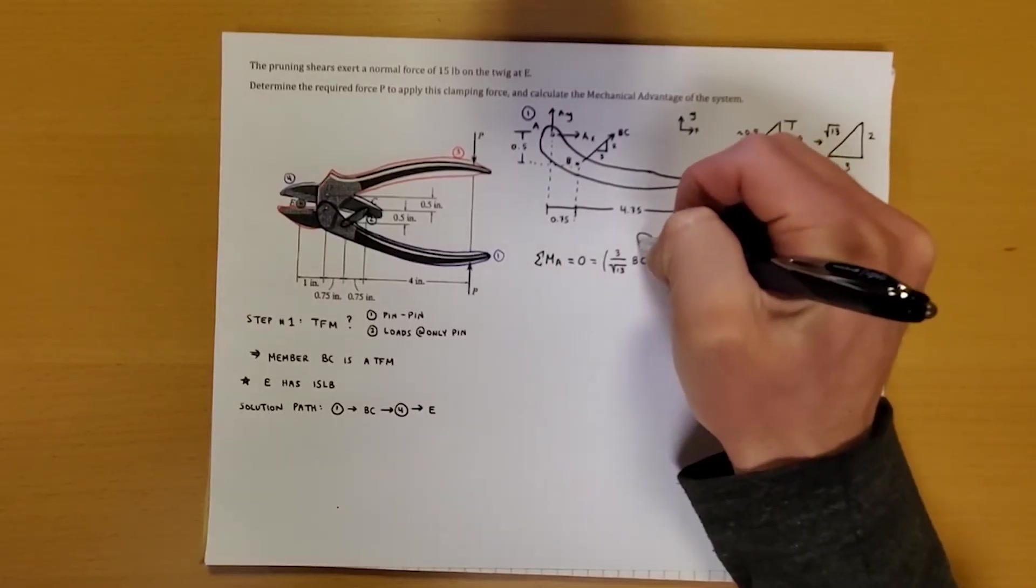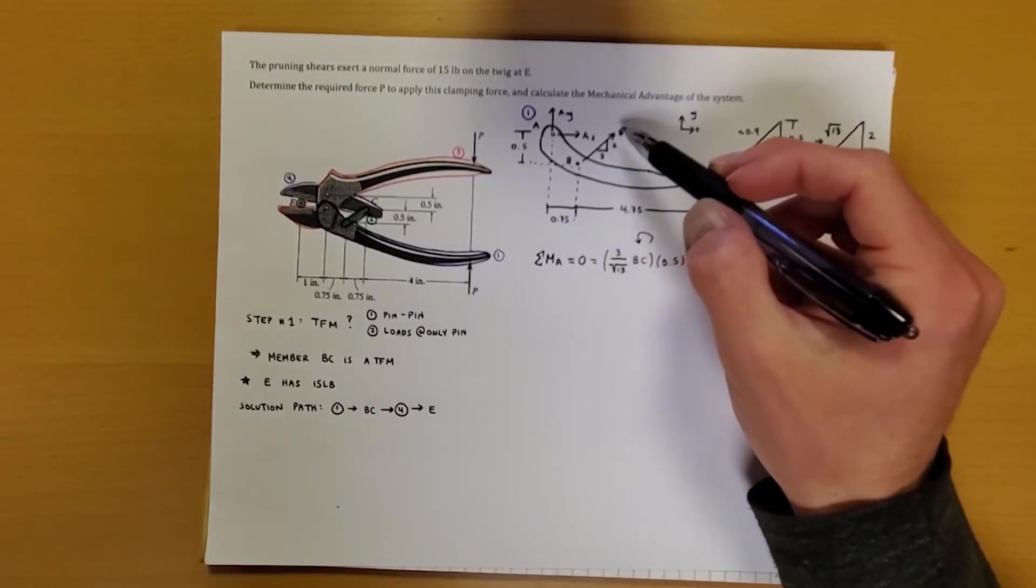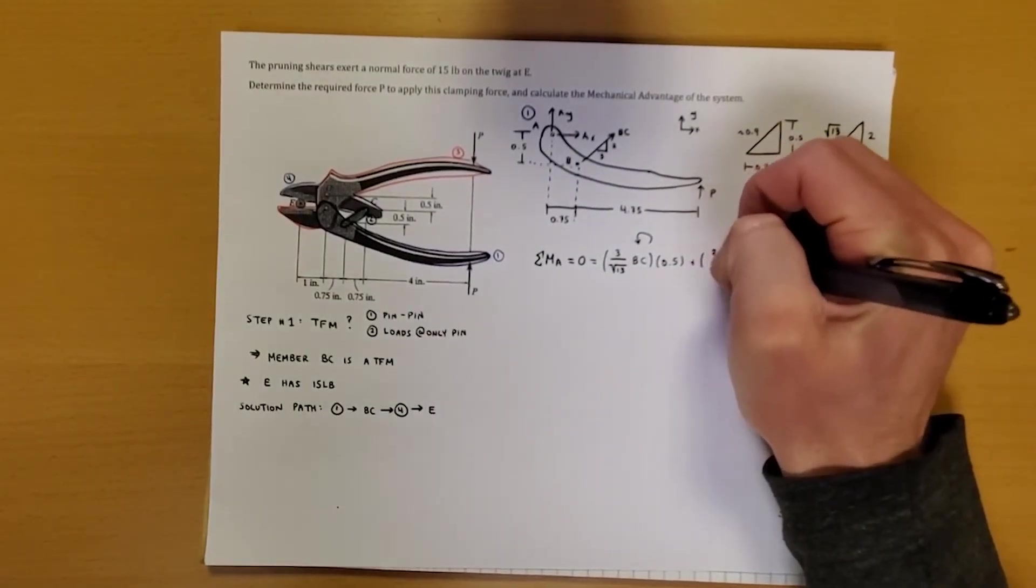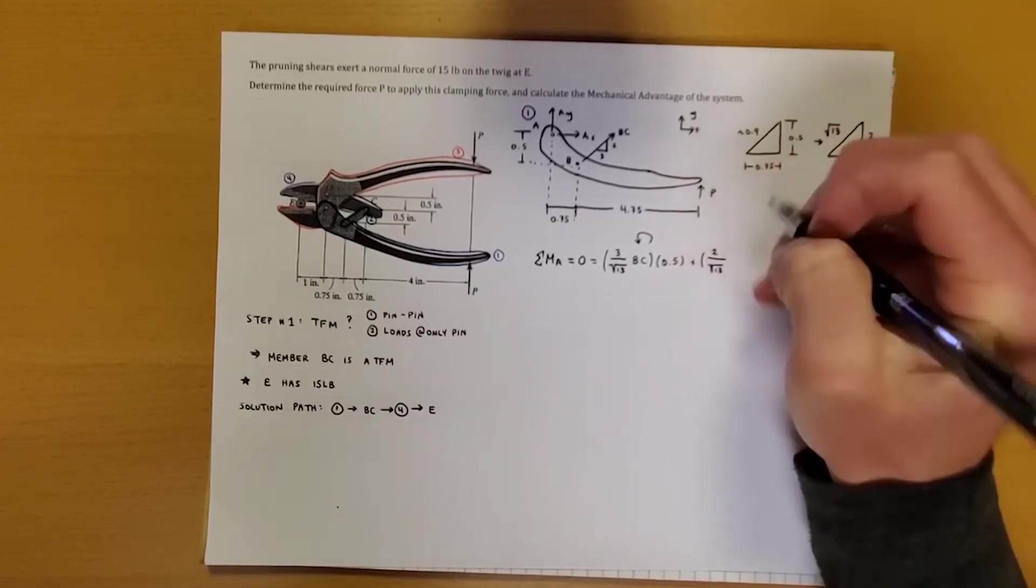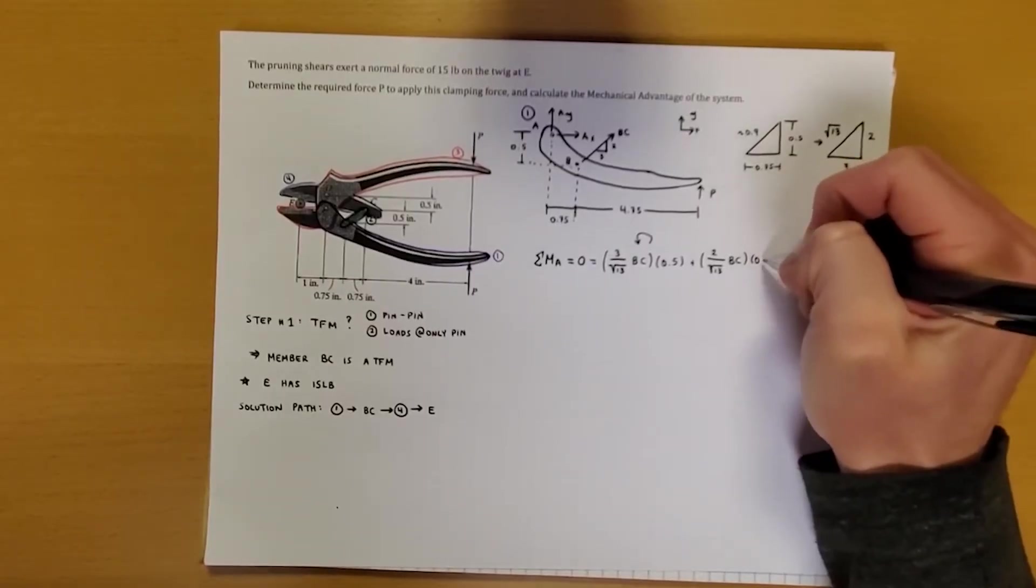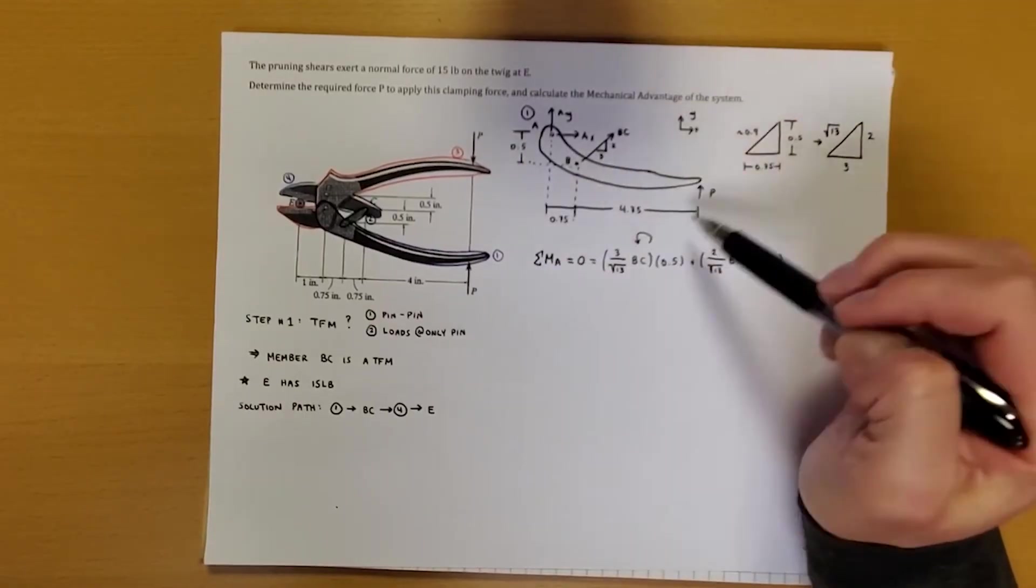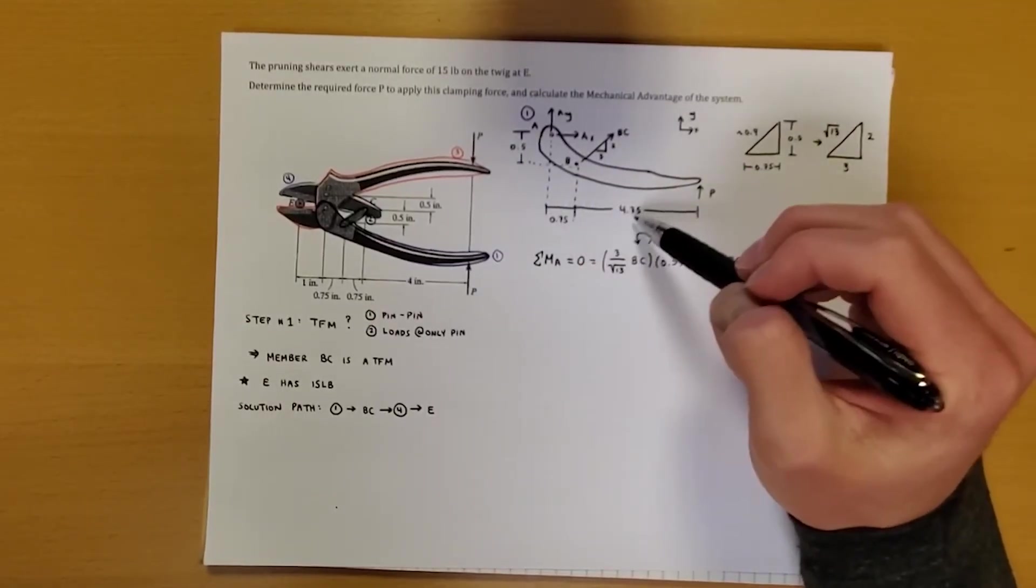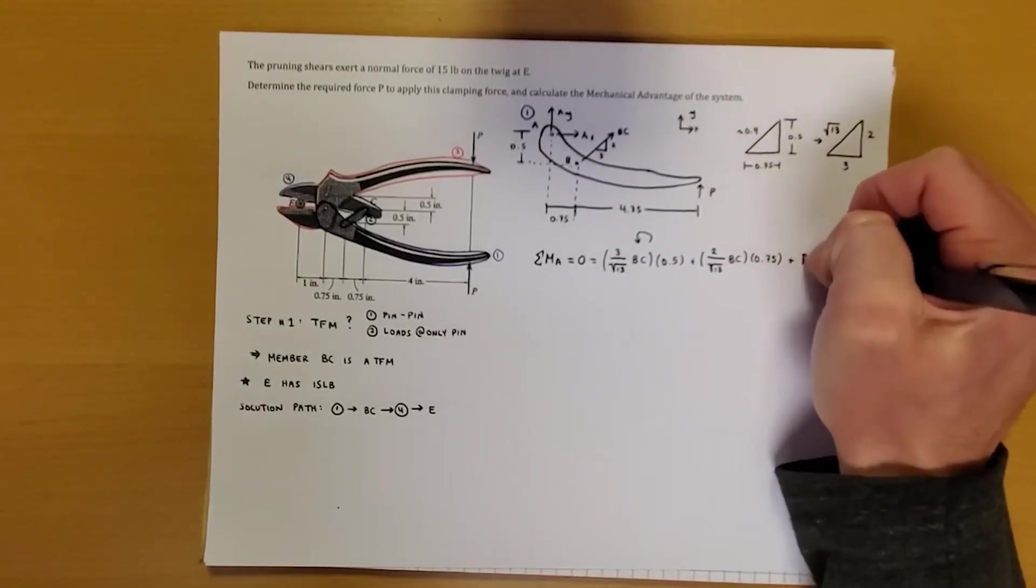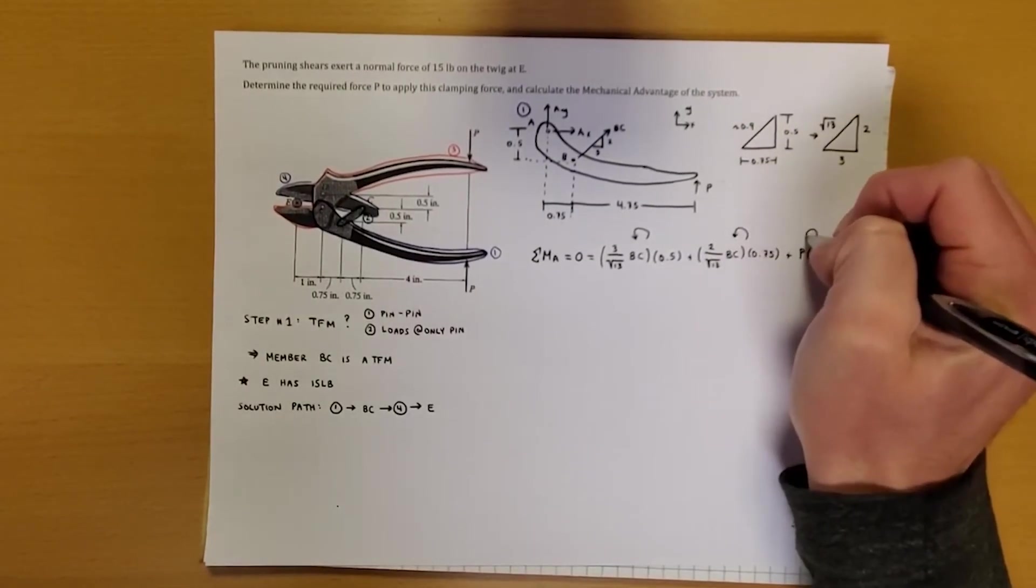This is going to go counterclockwise. Then we've got our Y component of BC. Our Y component is also going to go counterclockwise. So again we have plus 2 over root 13 BC times a distance of 0.75. And then last but not least we have P going up and around, also counterclockwise, times 4.75 plus 0.75, which is 5.5. So we have plus P times 5.5.